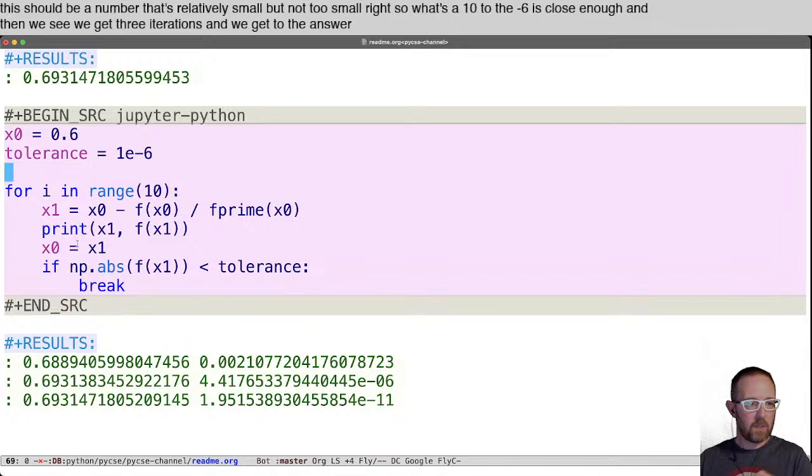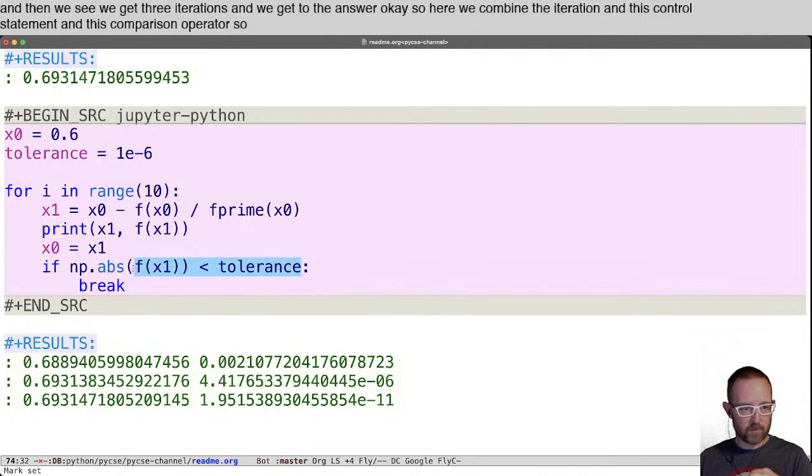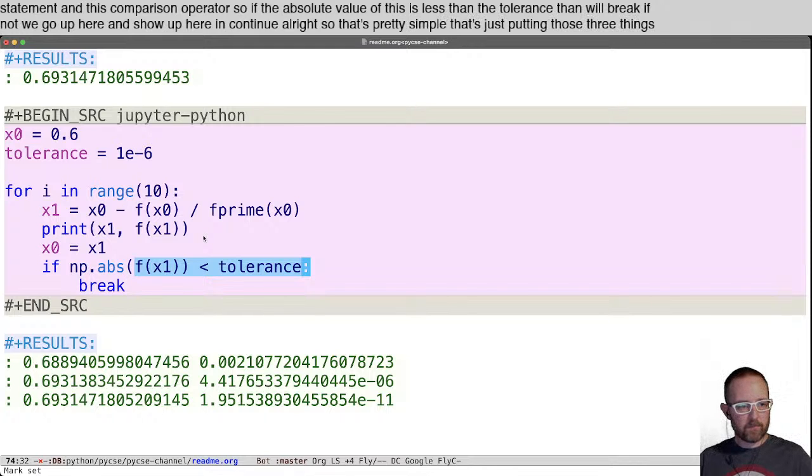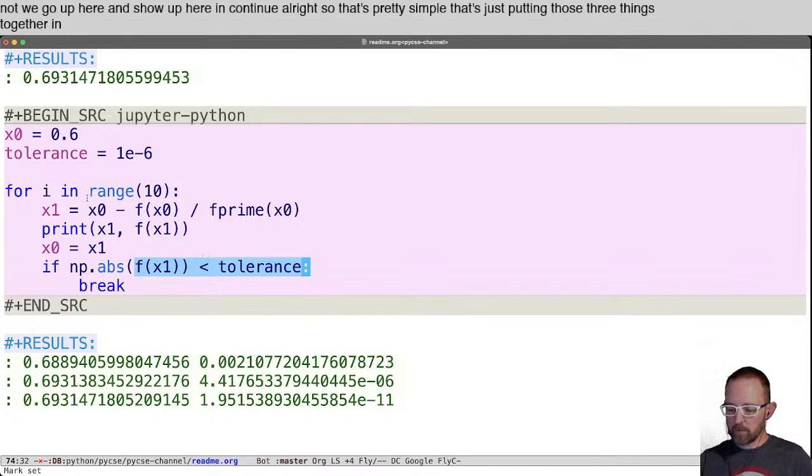Okay, so here we combine the iteration and this control statement and this comparison operator. So if the absolute value of this is less than the tolerance, then we'll break. If not, we go up here and continue. All right, so that's pretty simple. That's just putting those three things together, in the form of this algorithm called Newton's method.